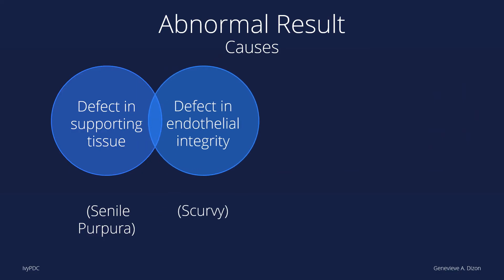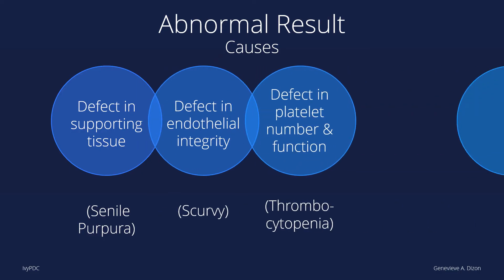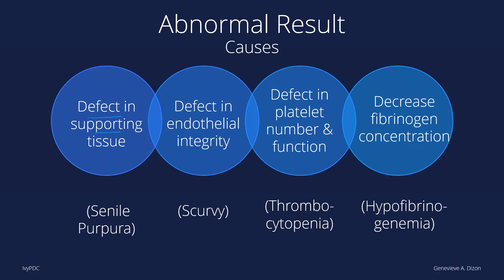Abnormal results may be caused by different conditions. Examples include a defect in the supporting tissue, such as in senile purpura, and defects in endothelial integrity, which will also increase CFT. Platelets play a role in CFT abnormality, either in number or in function, as seen in thrombocytopenia. Fibrinogen also plays a role; a decrease in its concentration, as in hypofibrinogenemia, will increase CFT.